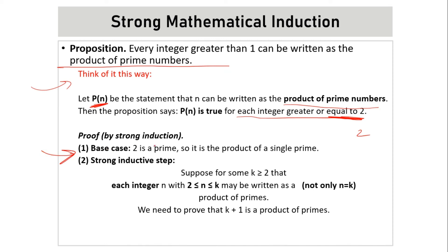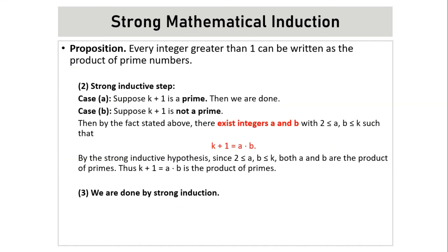Proof by strong induction. For the base case, we assume it is true for the first value. Since two is a prime number, it is a product of a single prime, so P of two holds. For the strong induction step, we need to show that it is true for all values between two and K, and then prove that K plus one is also a product of primes.